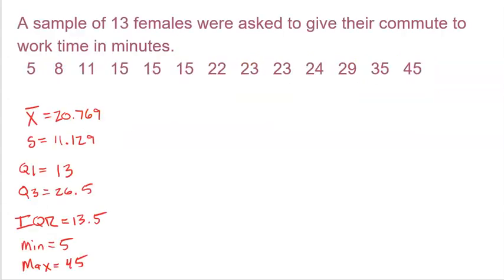So let's go back to the data set that we've looked at already a couple times. These are the 13 commute times of 13 women. And we already have all the data that we got here. So we got the mean, standard deviation, Q1, Q3, IQR is Q3 minus Q1, min, max. I actually forgot to write down the median. The median, I believe, was 22. So I'll squeeze that in here. The median is 22.